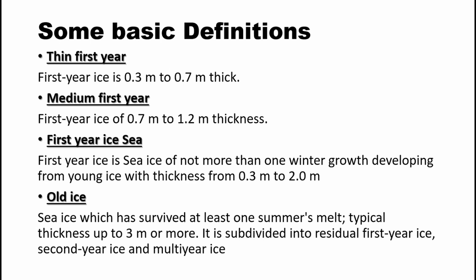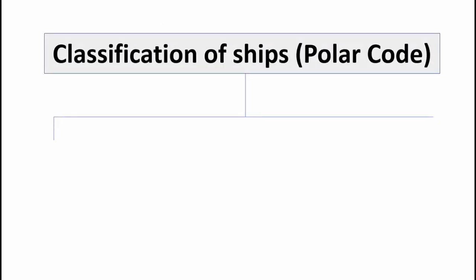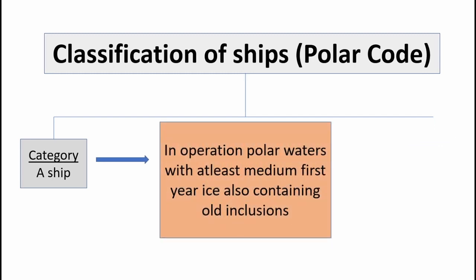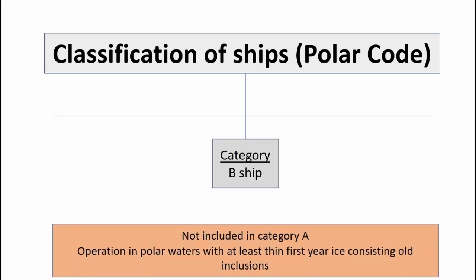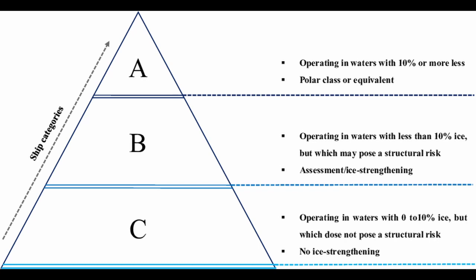Let us move on to different types of polar ships. Polar ships are divided into three different categories on the basis of hazardous situations and thickness of ice. Category A ship is designed for operation in polar waters in at least medium first year ice, which may also include old ice. Category B ship is designed for operation in polar waters in at least thin first year ice, which also includes old ice. Category C ship neither falls in Category A nor Category B but is only capable of handling ice of lesser thickness comparatively.